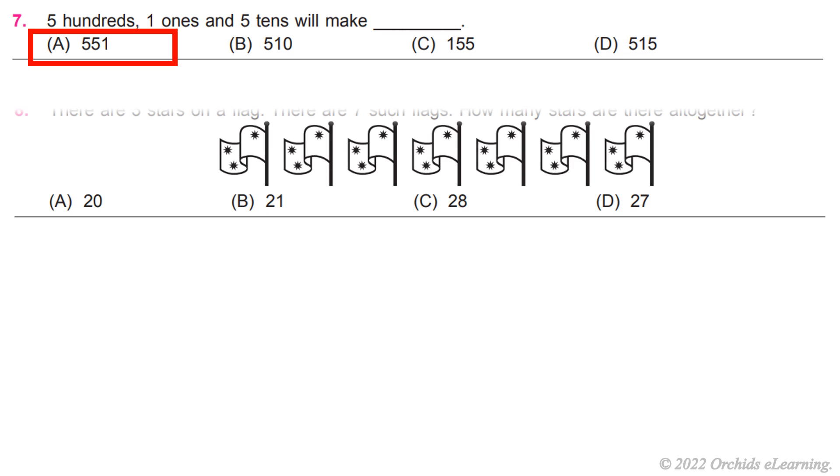Question 7: There are three stars on a flag. There are seven such flags. How many stars are there altogether? B) 21.